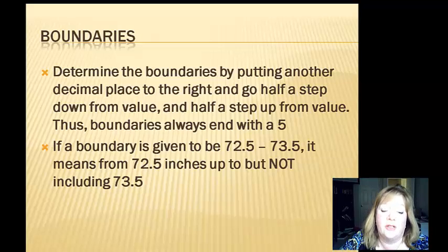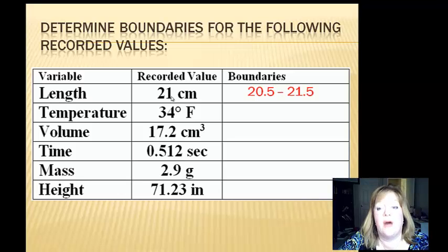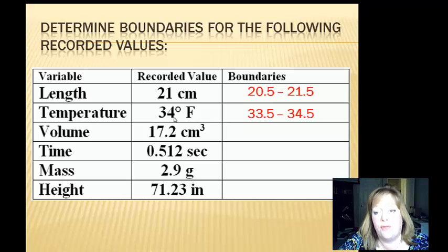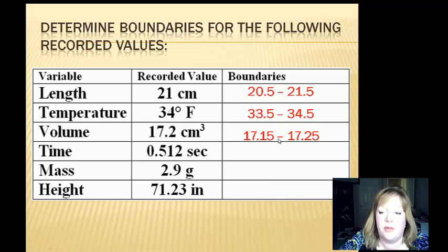The boundaries go up to but not including 73.5. To form boundaries, if you see 21, you go down a half a step — 20.5 — and up a half a step — 21.5. For 34, down a half a step is 33.5 and up a half a step is 34.5. For 17.2, you add a decimal place: 17.15 to 17.25. It always ends in 5, and the original value has to be right in the middle of the two boundaries.